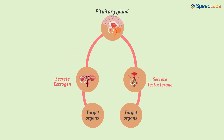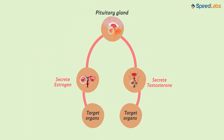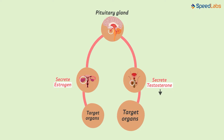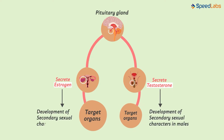Let's quickly recap the process. This master endocrine gland secretes hormones that go and target the various other glands in the body — in this case the testes and the ovaries in males and females respectively. On stimulation, these gonads secrete hormones like testosterone in males and estrogen in females. Testosterone targets various sites in a male body to help in the development of secondary sexual characters, and similarly the development of secondary sexual characters in a female is the responsibility of estrogen. This is how the onset of puberty brings various changes in the individual.